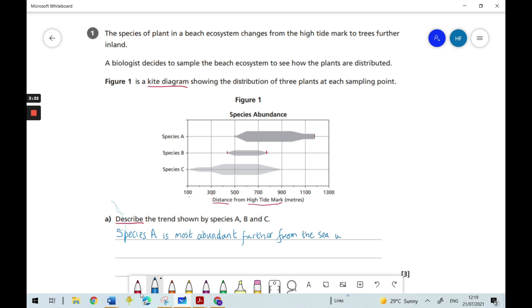While species C is most abundant, closest to the sea.